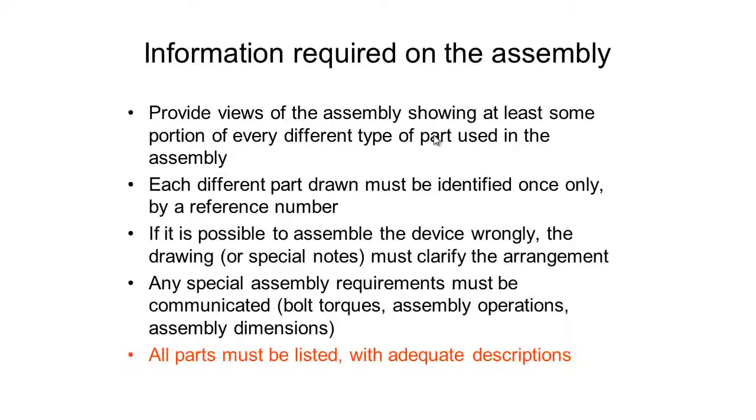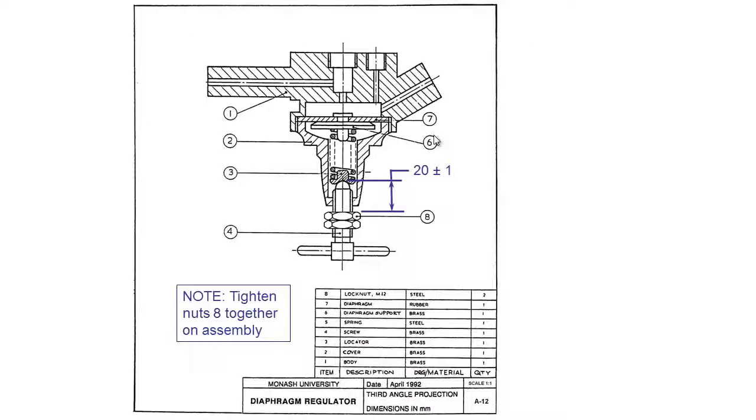All parts must be listed with adequate descriptions. Back to this example, if we take a look at part number eight, the lock nut, you can see it's specified as a lock nut and it's an M12. From that is enough information that you could go out and buy a lock nut that's size M12 made out of steel. One thing to note on this drawing is we have the drawing and material columns which were separate on one of our previous examples. They are now combined.